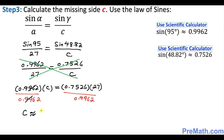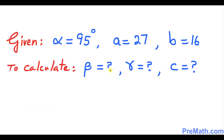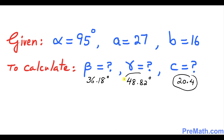So c equals approximately 20.4 units. That is our missing side c. To summarize, we have solved triangle ABC: angle beta is approximately 36.18°, angle gamma is approximately 48.82°, and side c is approximately 20.4 units. Thanks for watching, and please subscribe to my channel for more exciting videos.